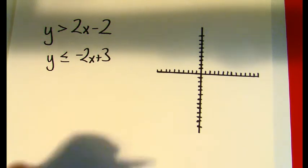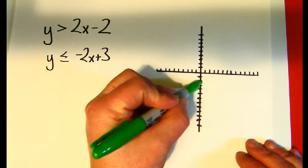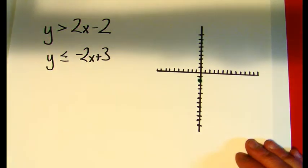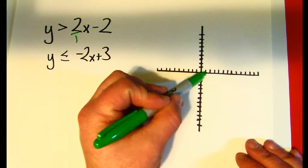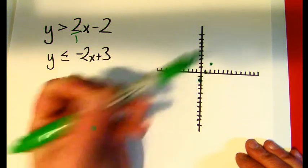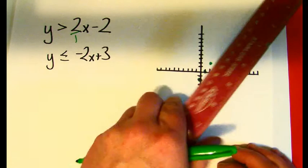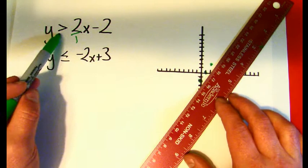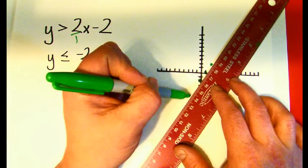So when you have y is greater than 2x minus 2, I'm going to go down to minus 2 and make a dot, and then the 2 of course is 2 over 1, so I'll go up 2 and over 1, and I'll go up 2 and over 1 again, and then I can sort of draw my dotted line, because remember, there's no line underneath, so it's dotted.